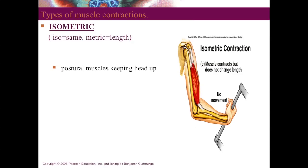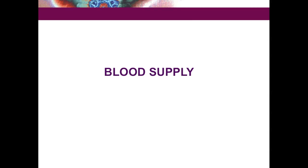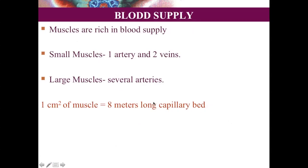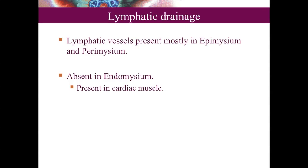Skeletal muscles are richly supplied by blood. The point of entry of blood vessels is called the neurovascular hilum, because the nerve also enters at the same point. Small muscles receive one artery and two veins; large muscles receive several arteries. It is said that one square centimeter of muscle has eight meters of capillary bed. Lymphatic vessels are present mostly in the epimysium and perimysium, and absent in the endomysium except in cardiac muscle.